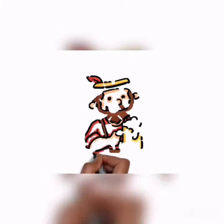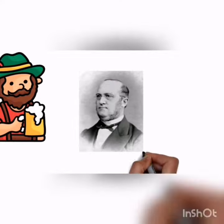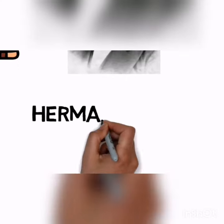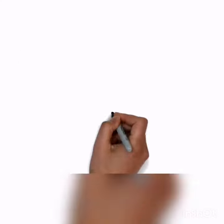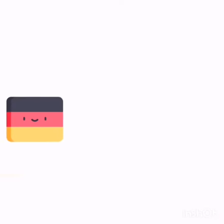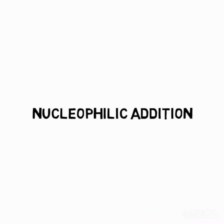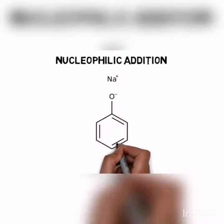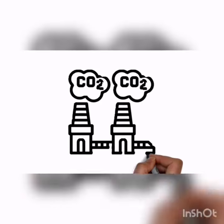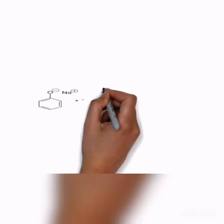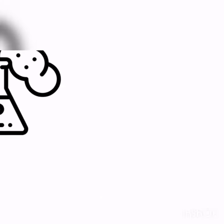The Kolbe-Schmitt reaction was named after the German scientist Hermann Kolbe and his colleague, who is German too, whose name is Rudolf Schmitt. This reaction proceeds by the nucleophilic addition of sodium phenoxide to carbon dioxide to get salicylate, which is treated by sulfuric acid to get our final product, which is salicylic acid, as we see.